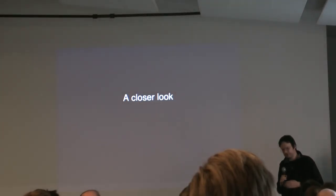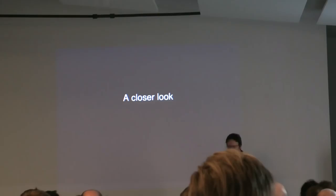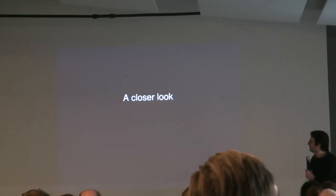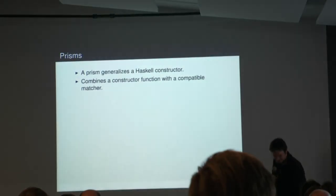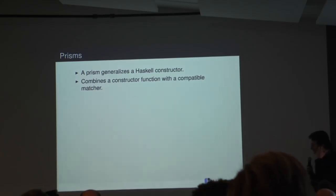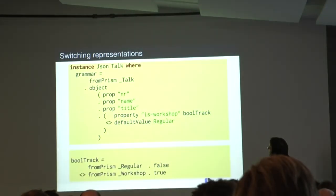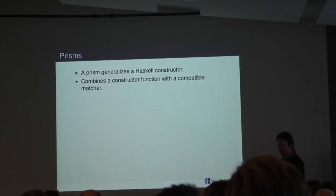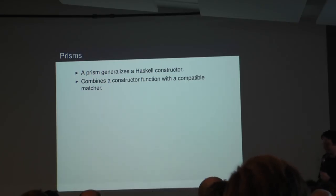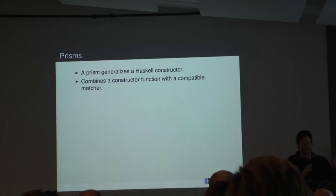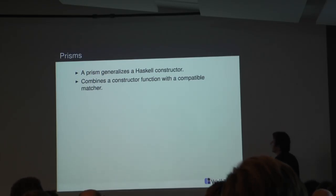Let's take a closer look at how this works. The things used here are called prisms, from the area of lenses. A prism is essentially a generalization of a constructor. You can think of it as combining the function that takes argument values and constructs a compound value, together with a compatible matching function that takes the compound value, checks whether it belongs to the right constructor, and either fails or takes it apart and gives back all the components.